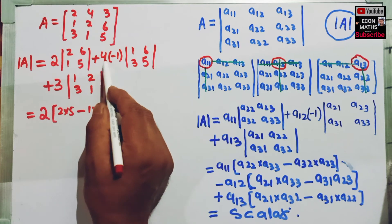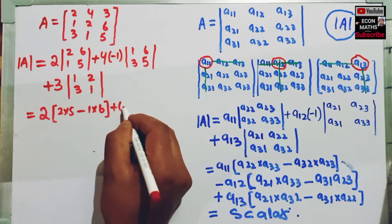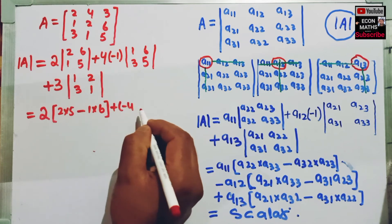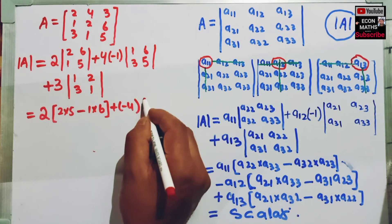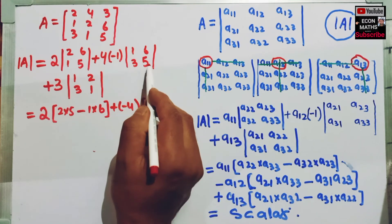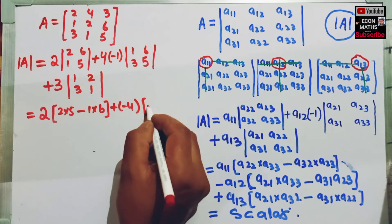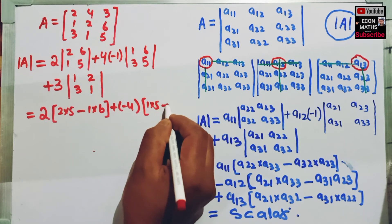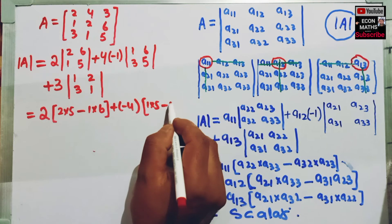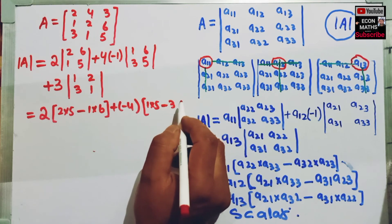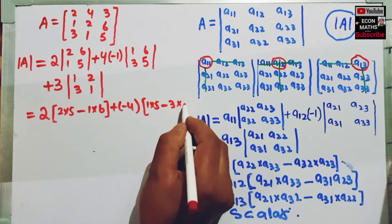Similarly, 4 times minus 1 will become minus 4. Multiplying the principal diagonal elements first: 1 into 5, minus the non-principal diagonal 3 into 6.